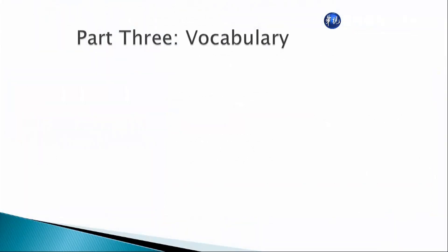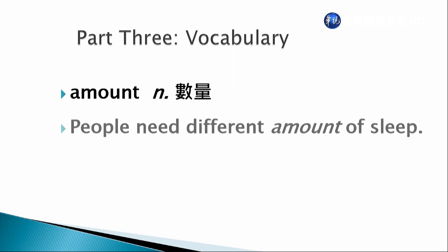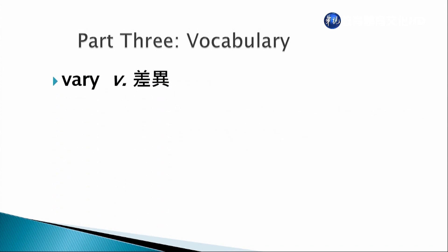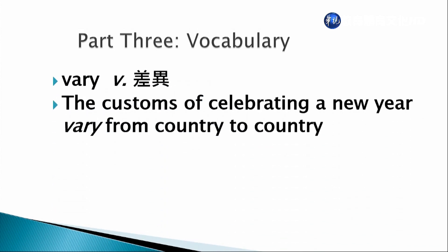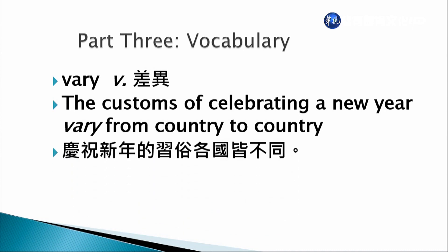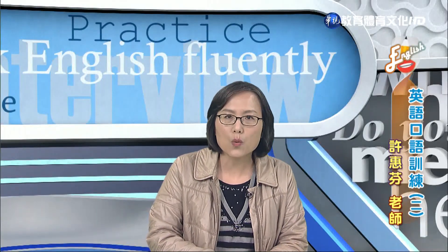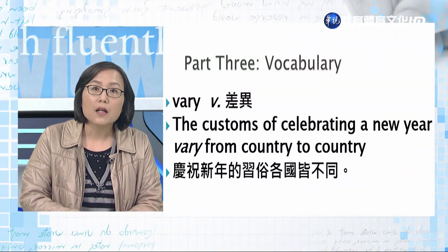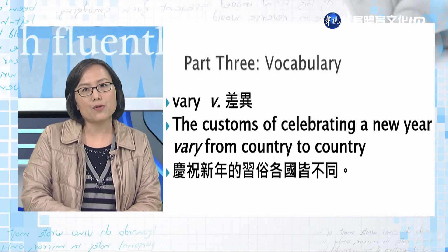Amount，數量。People need different amounts of sleep，大家需要的睡眠量都不同。Vary，差異，當動詞用。The customs of celebrating a new year vary from country to country. 慶祝新年的習俗各國皆不同。Vary from country to country這個用法很好用，也可以說the customs of celebrating birthdays vary from country to country，各國慶生的方式也都不一樣。